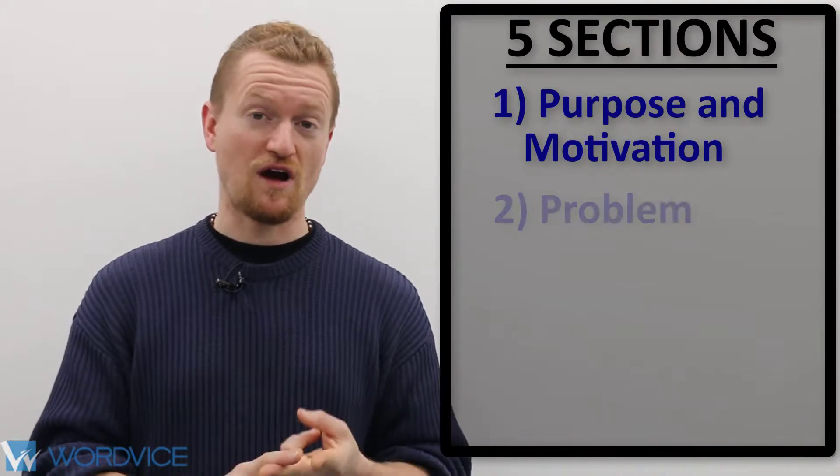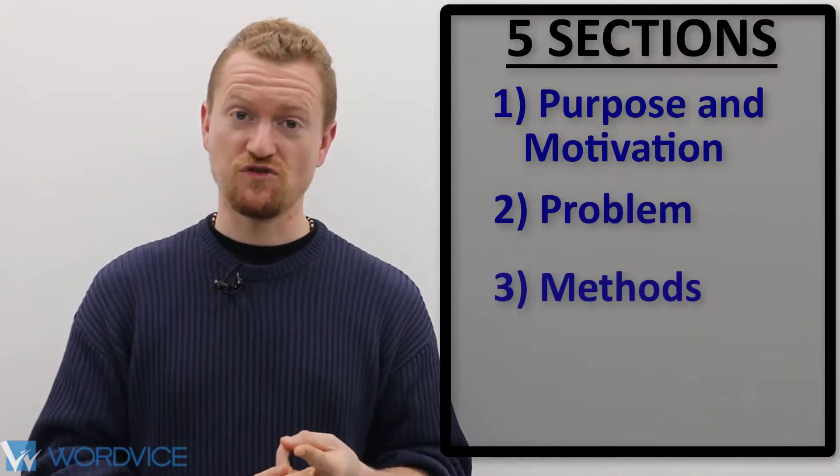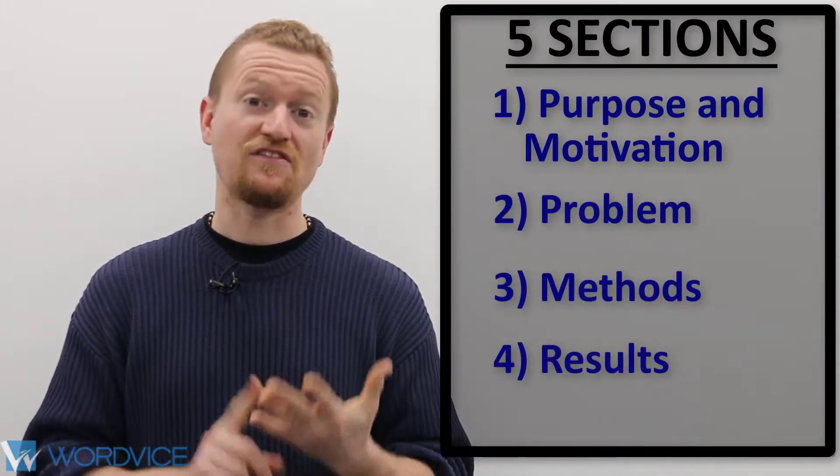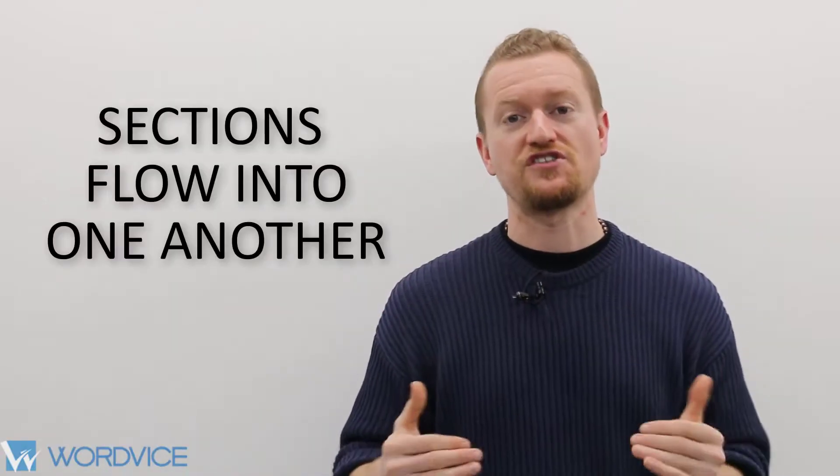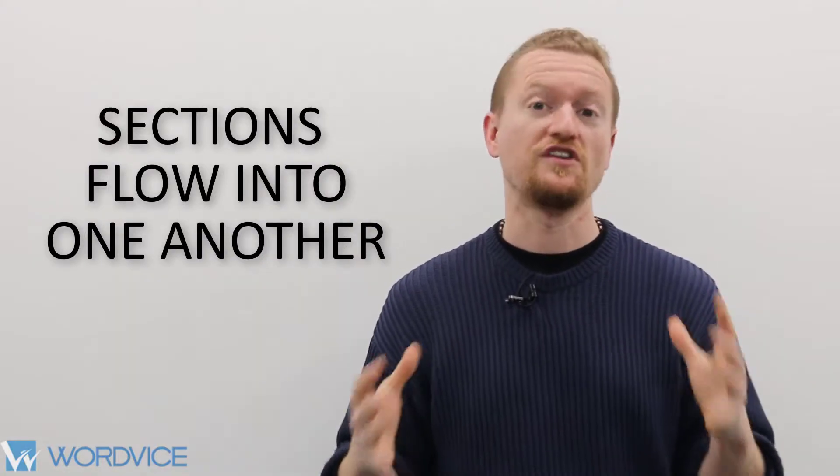Now let's talk about the structure of the abstract. An abstract is essentially a summary of your paper and contains five sections. These sections are the purpose and motivation, the problem, the methods you used, the results, and the conclusion. As abstracts are almost always one long paragraph, these sections will flow into each other and create a unified holistic effect.